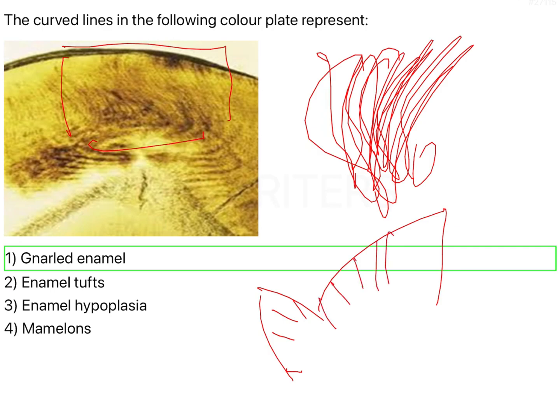There are places, especially like your incisal edges or your cusp tips, where a lot of these rods start intermingling with each other. Because they intermingle with each other, they appear very coarse and very rough, giving a very gnarled appearance. That is why it is called gnarled enamel.